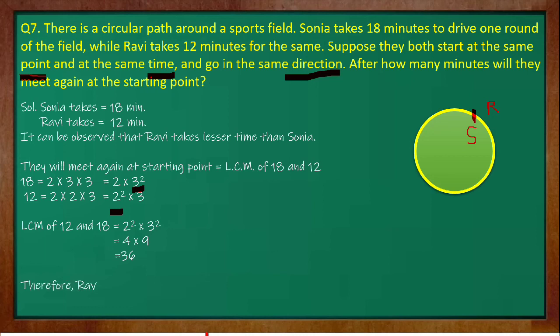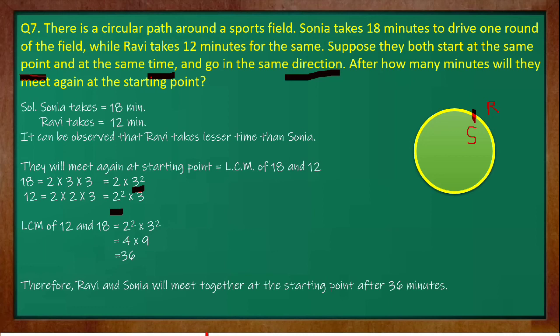Ravi and Sonia will meet after 36 minutes at the same starting point again. This finishes exercise 1.2. You can write this exercise in your notebook in the format shown here. Be careful about alignment — all equals signs should be in the same line, with proper neat and clean handwriting. Do rough work on the right-hand side or at the bottom of the page. Thank you so much.